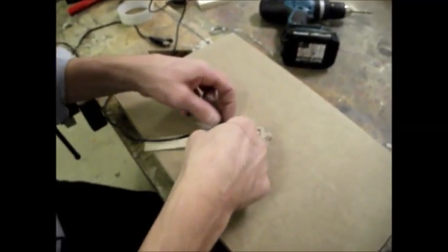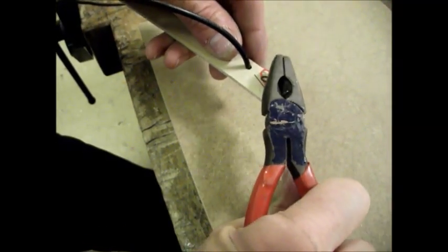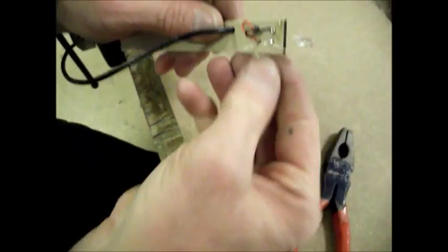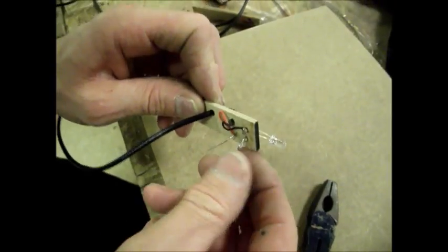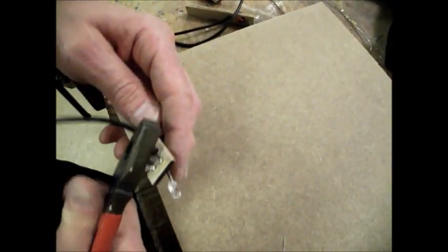All you need to do now is to get a pair of side cutters or something and remove the extra length of the legs. You do that because they mustn't touch and the thing is in use.